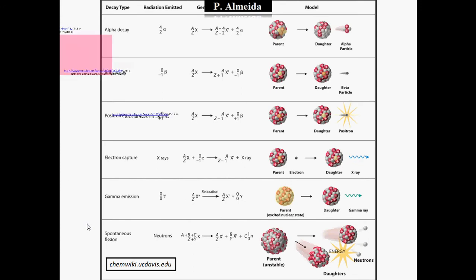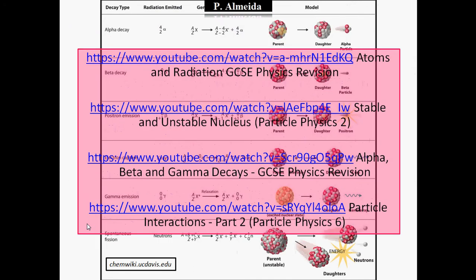However, if you don't know this, or you want to recap or revise, or you want to know a little bit more about the background information, I'm going to put four links in the description. All of them together are going to explain each of these decay types, the radiation emitters, and the general equations — everything you need as background information.